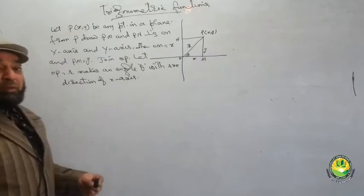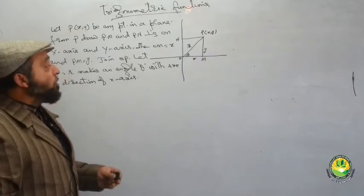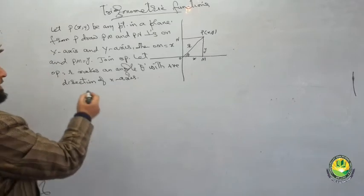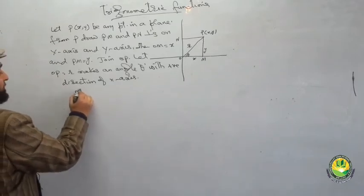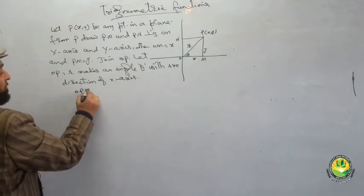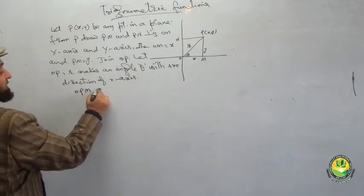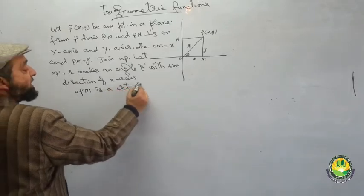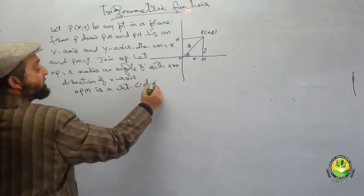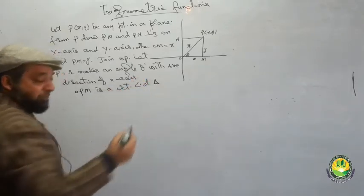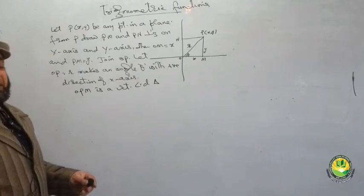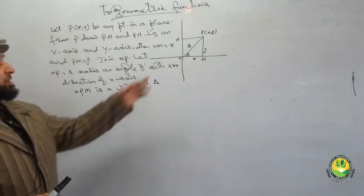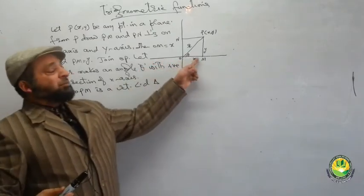Then we have a right-angled triangle OPM. In this right-angled triangle OPM, the three sides are the base, the perpendicular, and the hypotenuse.